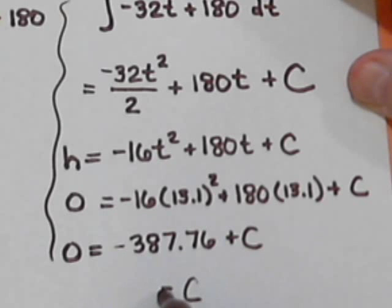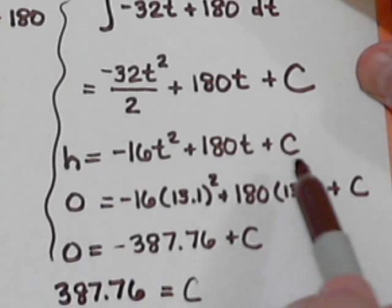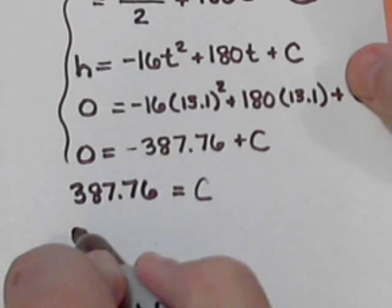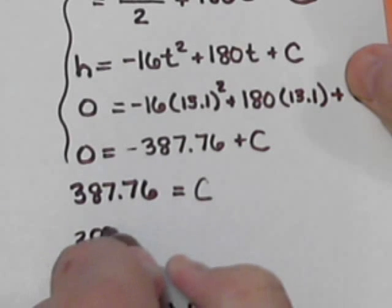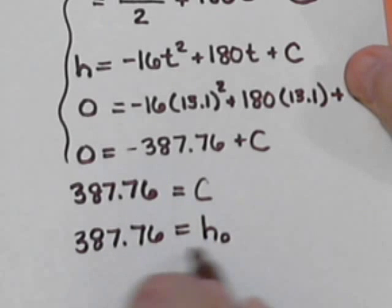It goes from being a negative to being a positive. And since C was in the position of our initial height, this also tells us that 387.76 feet is our initial height.